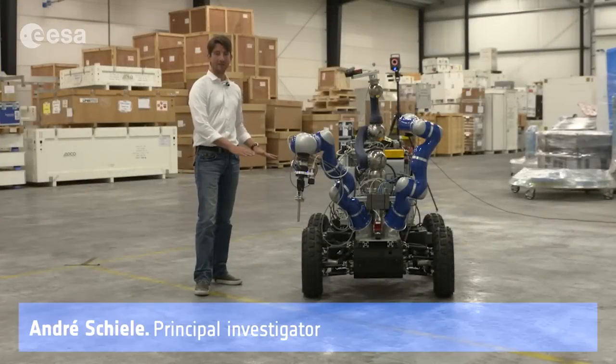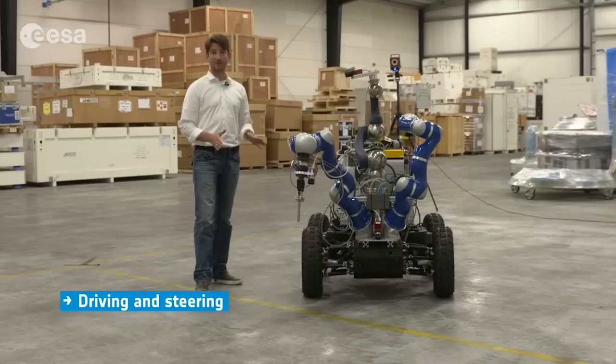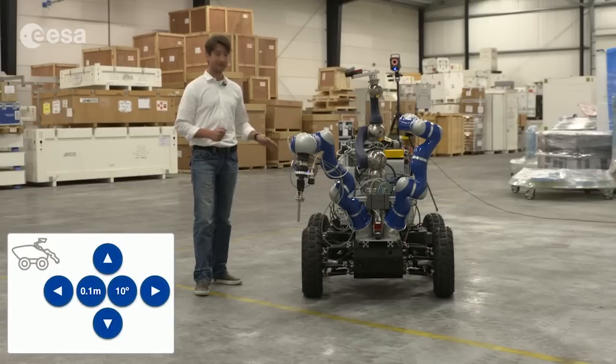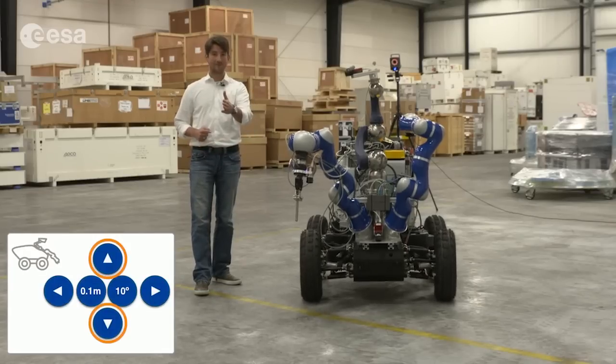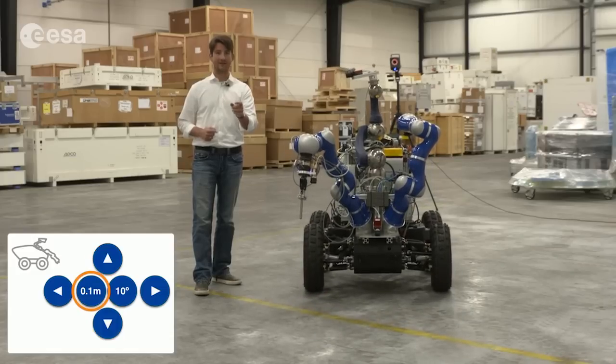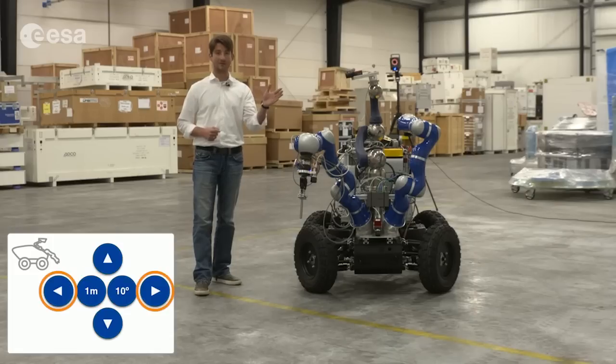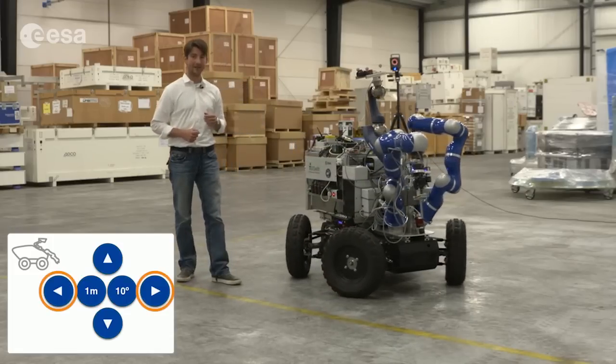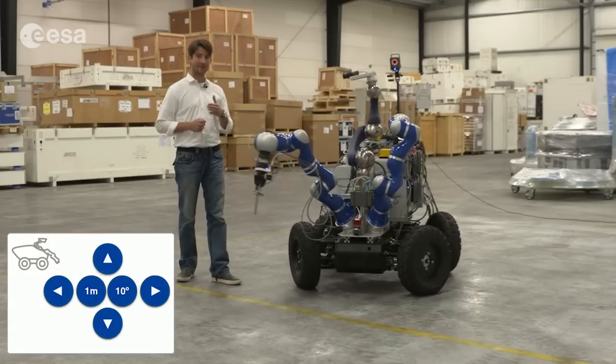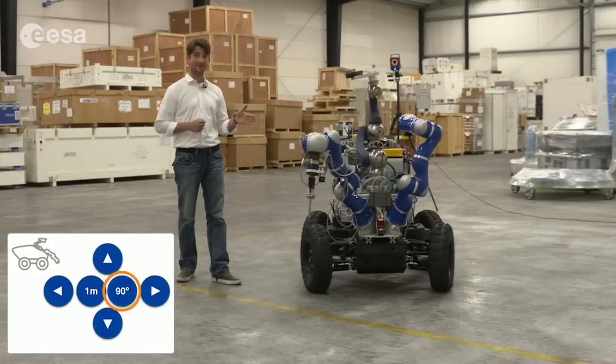Interact Centaur has a mobile platform that is rough terrain compatible. It has four wheels and four-wheel steering. Interact can go forward, backward, and you can command it in increments of 10 centimeters, 50 centimeters, and 1 meter. It can do spot turns, and you can command increments of 10 degrees, 45 degrees, and 90 degree segments.